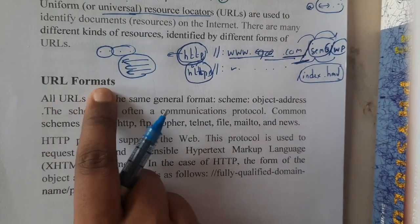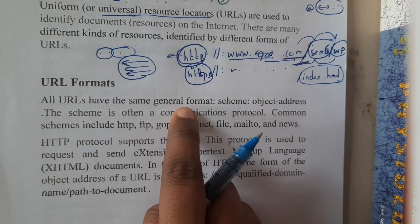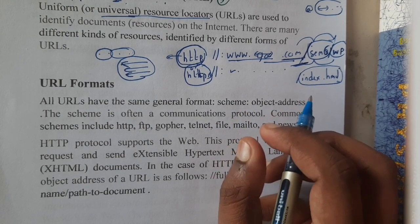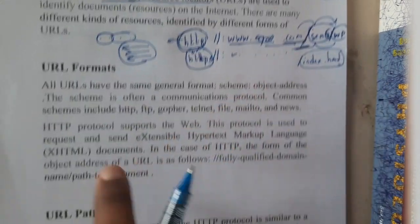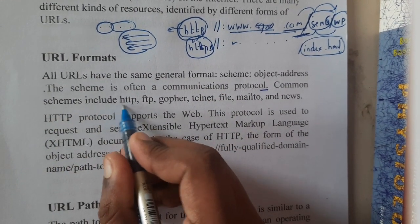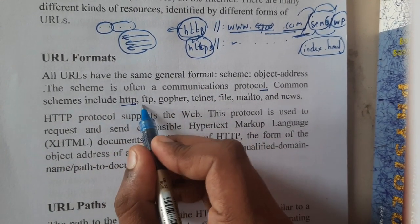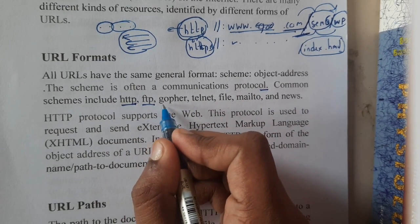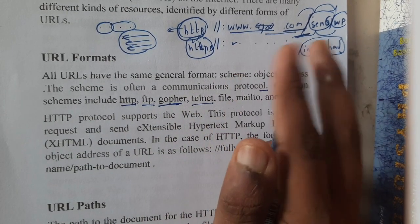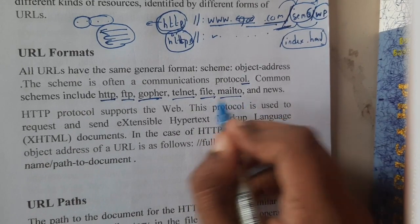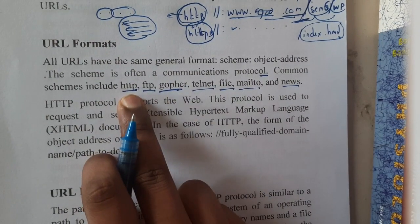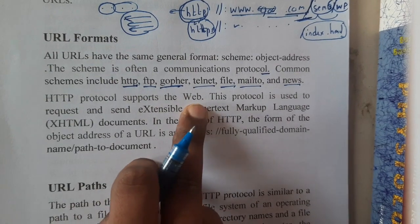First let us go through URL formats. All URLs have a general format: schema:object address. The schema is nothing but what protocol it is using, and the object address is the rest of the part. Common schema protocols are: HTTP for HTML file transfer, FTP for normal file transfer, GOPHER, telnet for communication between two devices, file, mailto for mailing, and news.